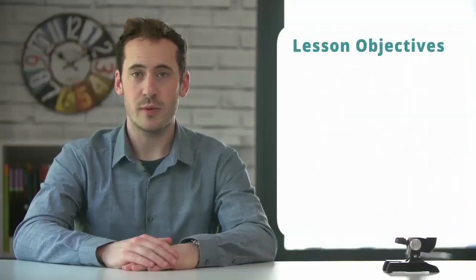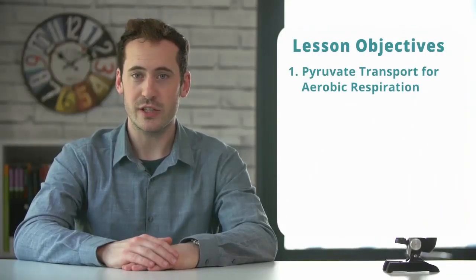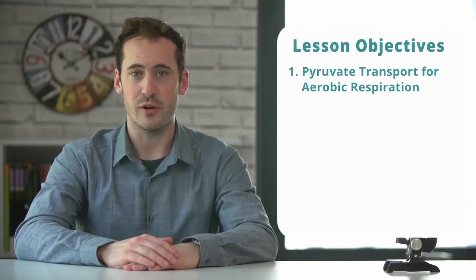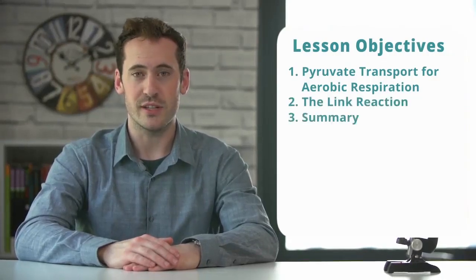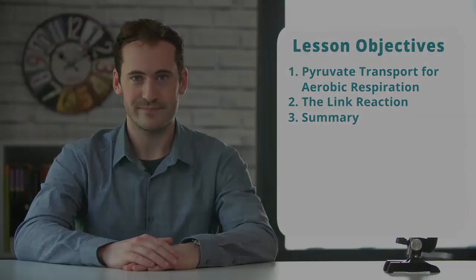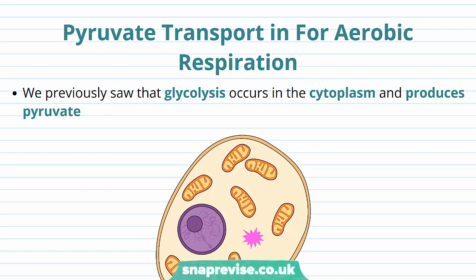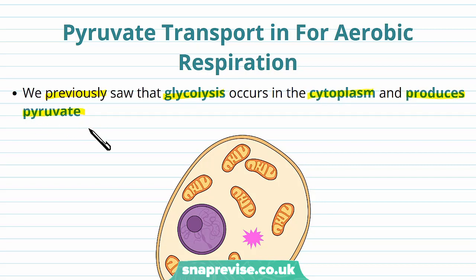Hi guys, in this video we'll be looking at pyruvate transport for aerobic respiration, the link reaction, and then we'll finish with a summary. In the previous video we saw that glycolysis is the first step of respiration, and it occurs in the cytoplasm, producing mainly two molecules of pyruvate, and some ATP and NAD.